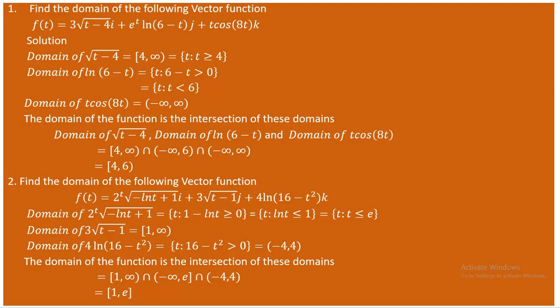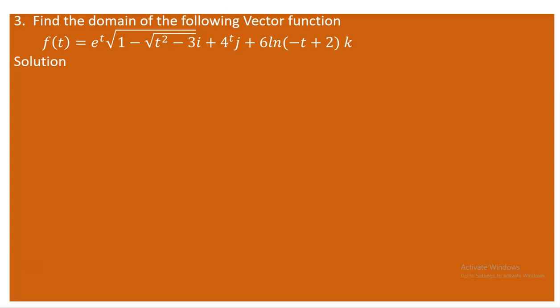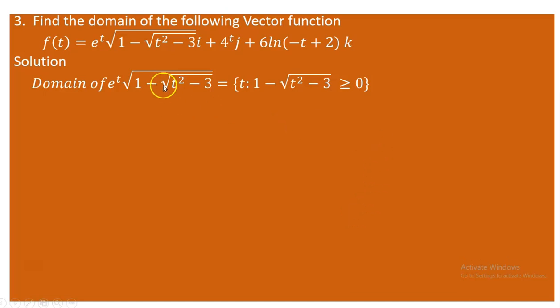Moving to question three, we are again asked to find the domain of a vector value function. We determine the domain of its three component functions. The first component is e^t · √(1 - √(t² - 3)), which contains a nested radical expression.